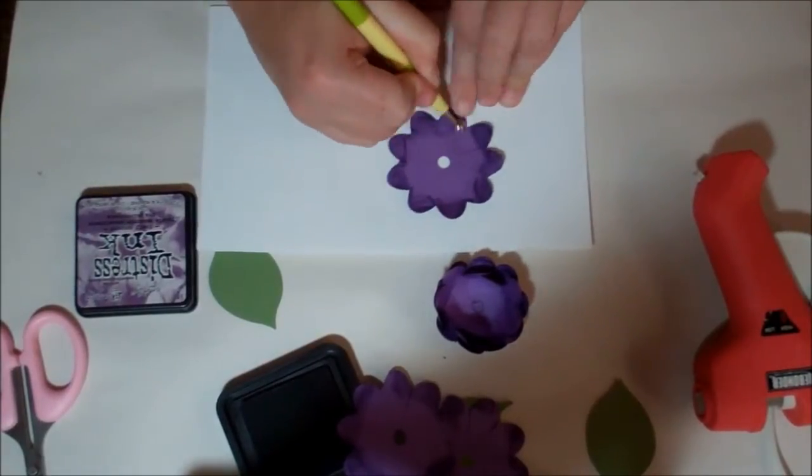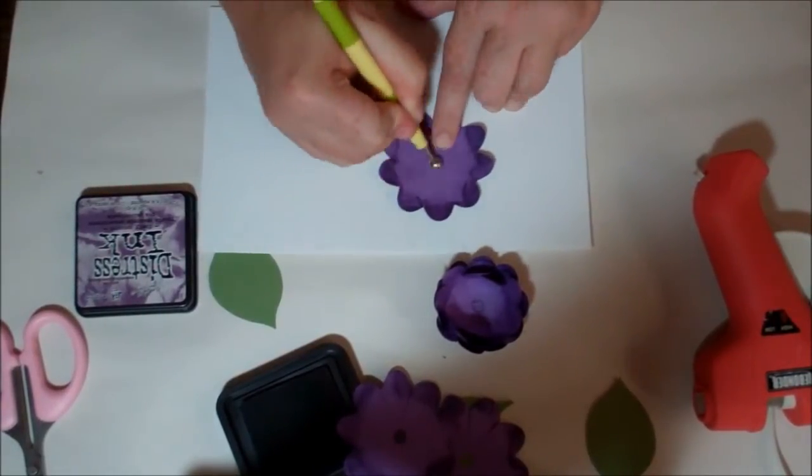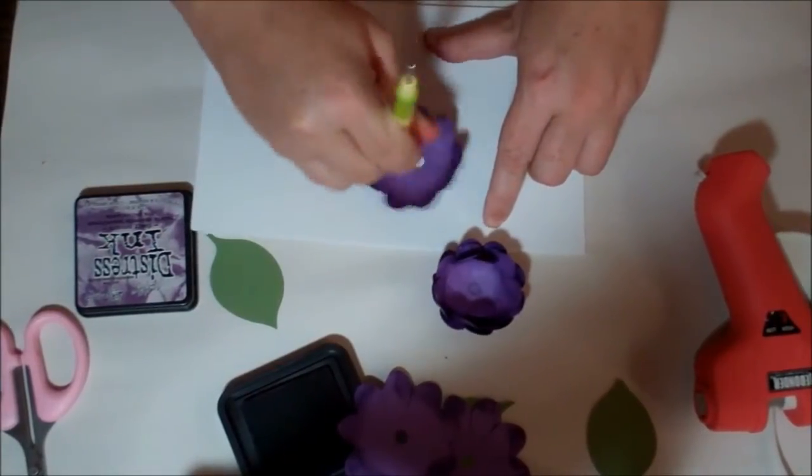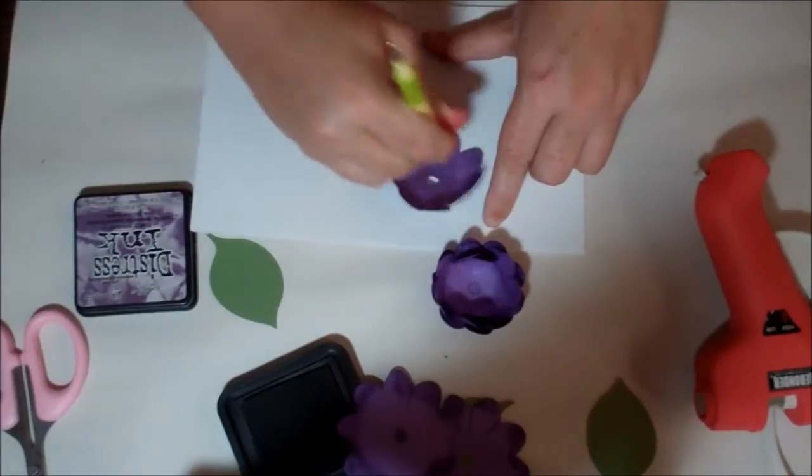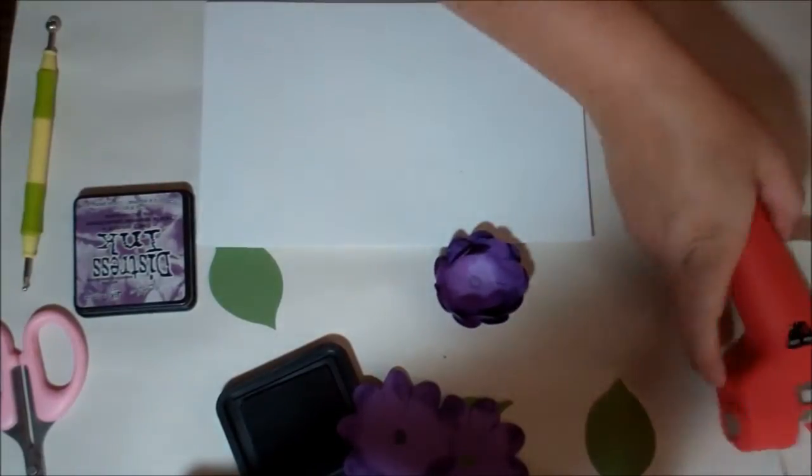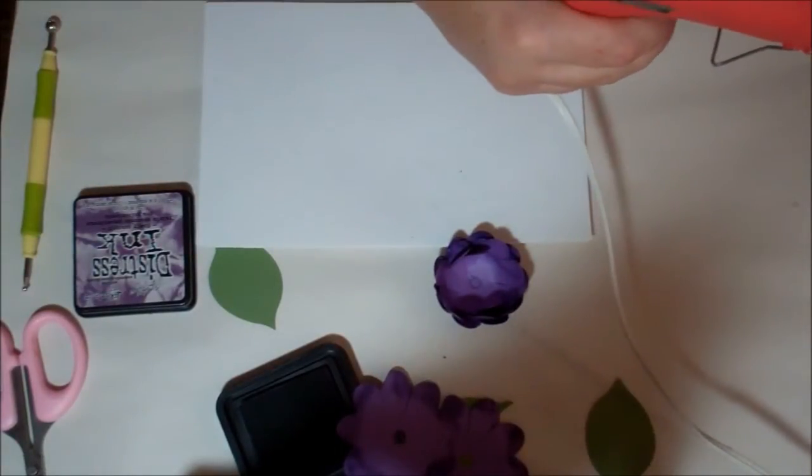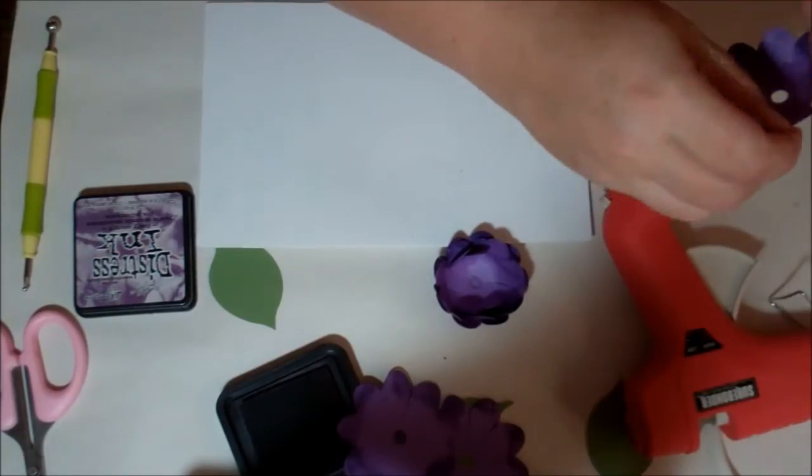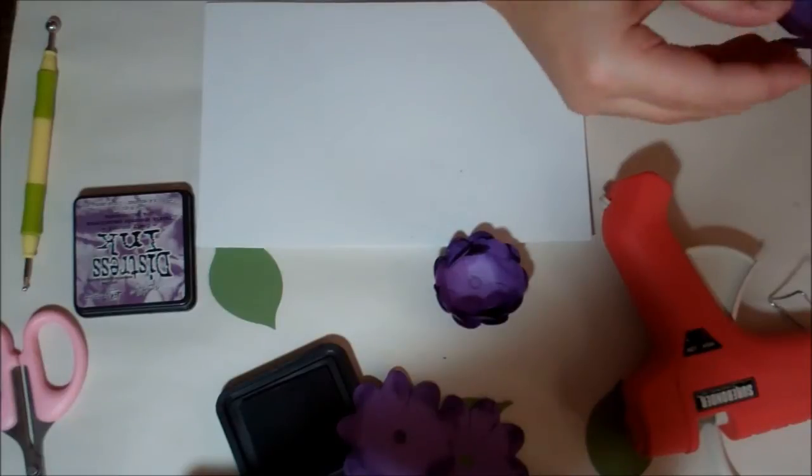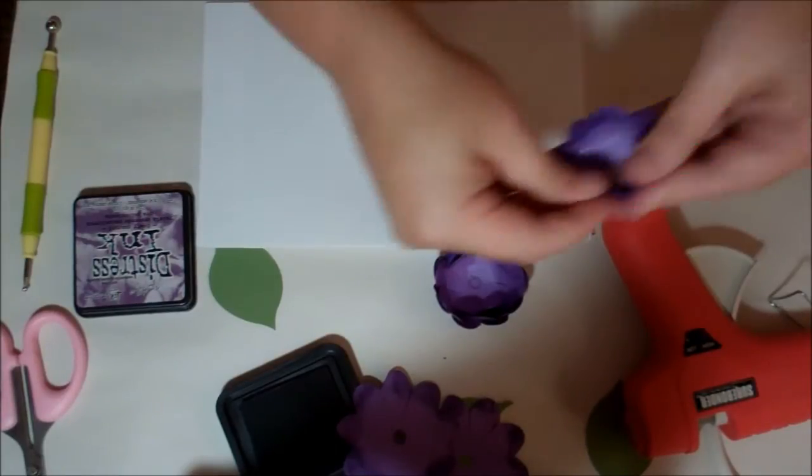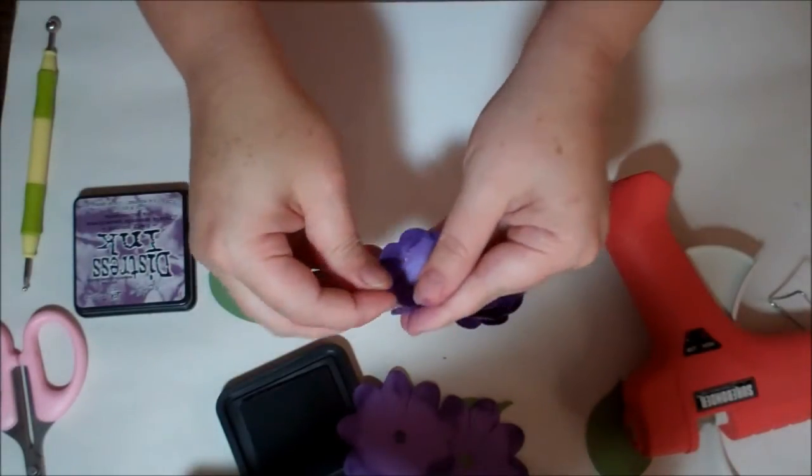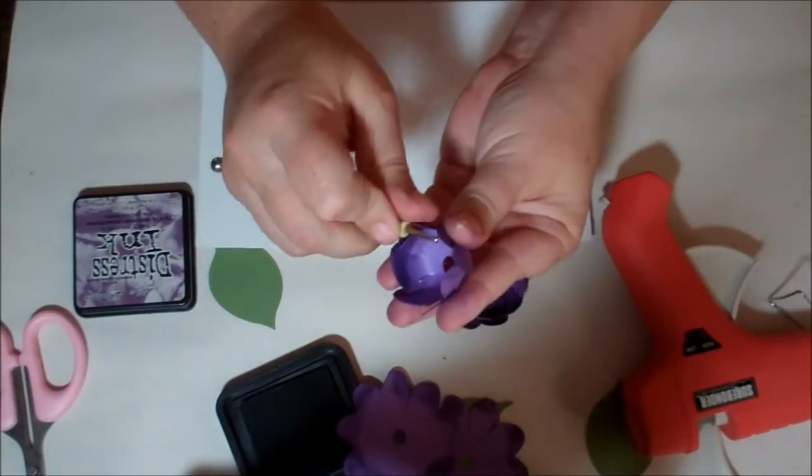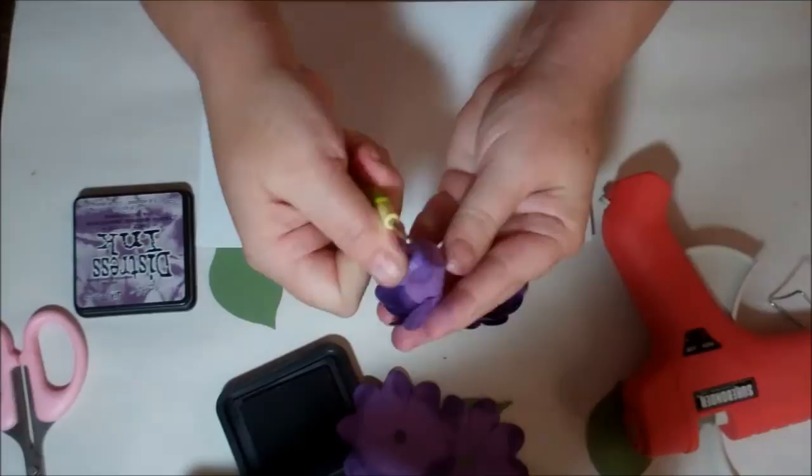Now what I'm going to do here is I'm going to put glue around this petal here and just overlay my petals that way. This will stay closer together, and if you need to, just use your stylus to bring these petals inward.